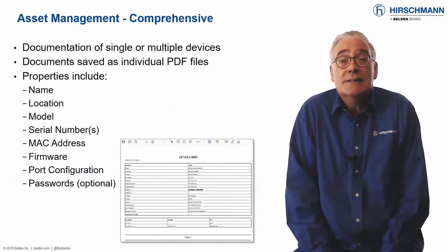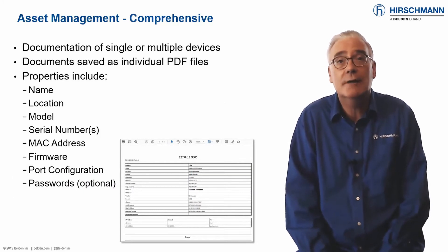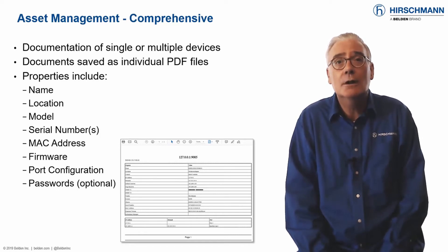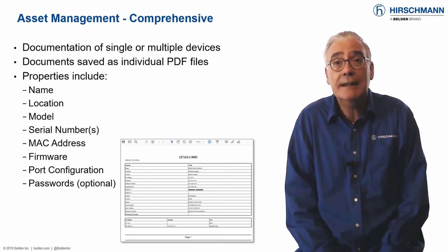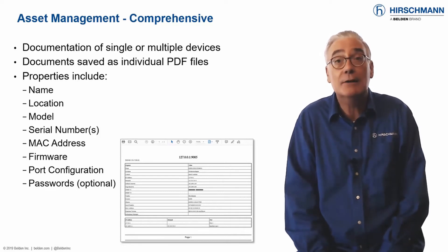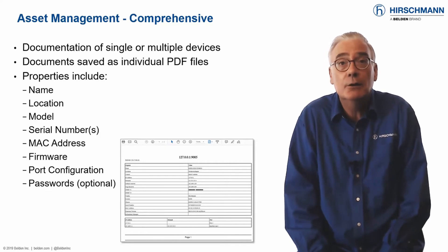The asset management summary provides the essential details about your network infrastructure devices. But maybe you need even more comprehensive information. The document device function will create an individual PDF document for each network device. The document not only contains information about the device, but also about sub-components.